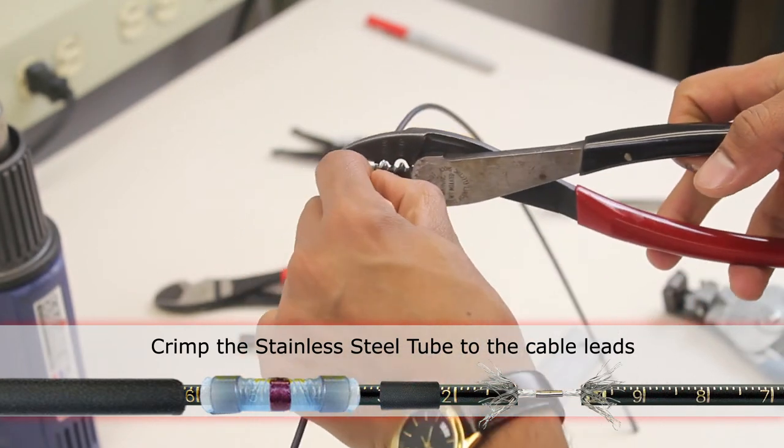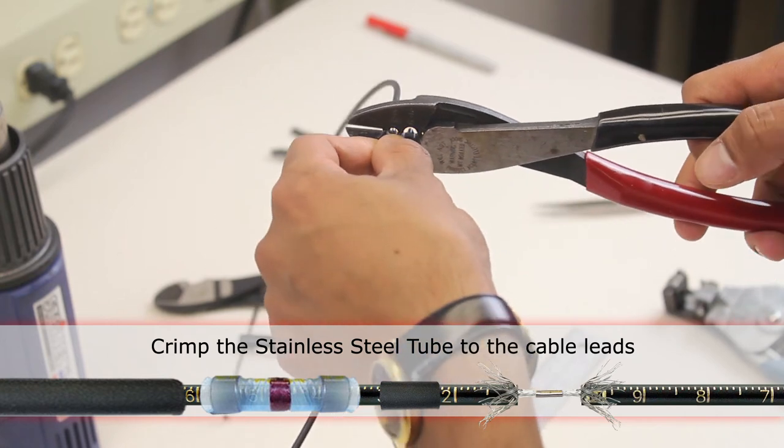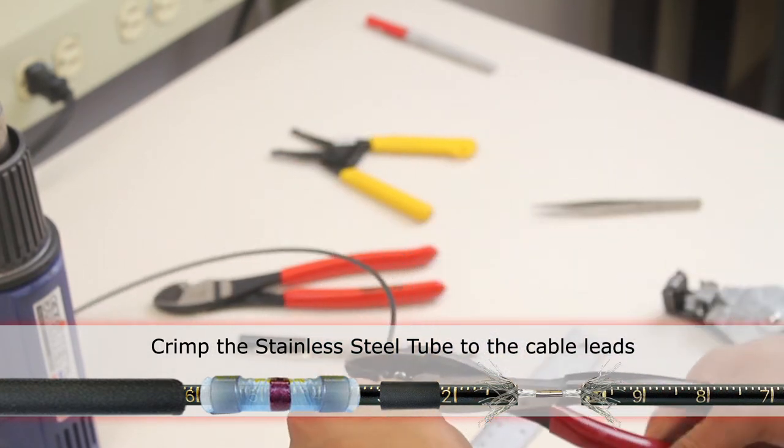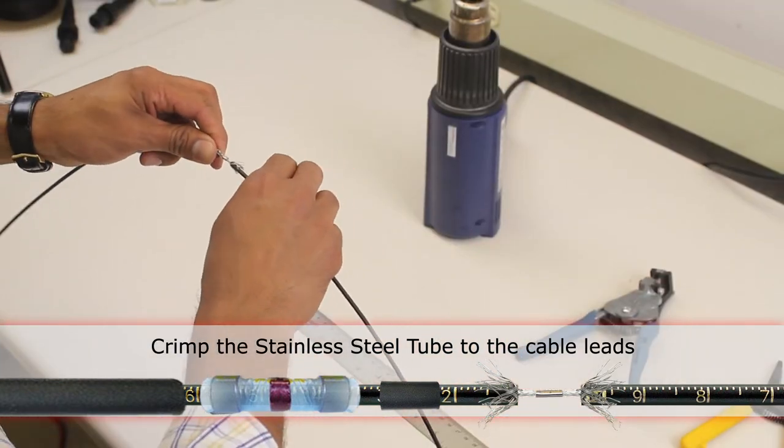Move the cable over a little bit. Crimp it again. Then just give it a pull to make sure it's on there good.